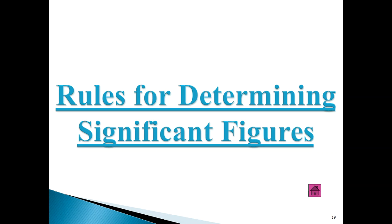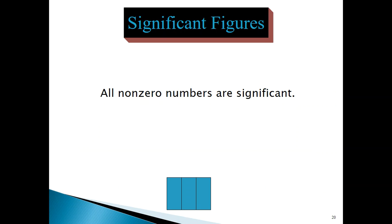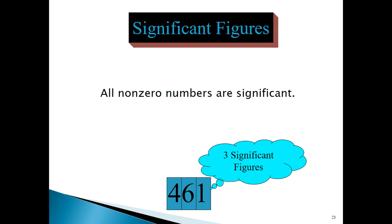Now we're going to get into the different rules for determining the number of significant figures. These rules, for the most part, have to do with zeros in particular situations. The first rule is simple: it deals with non-zero digits in a measured value. All non-zero numbers are significant. So, for example, in the number 461, there are three significant figures.